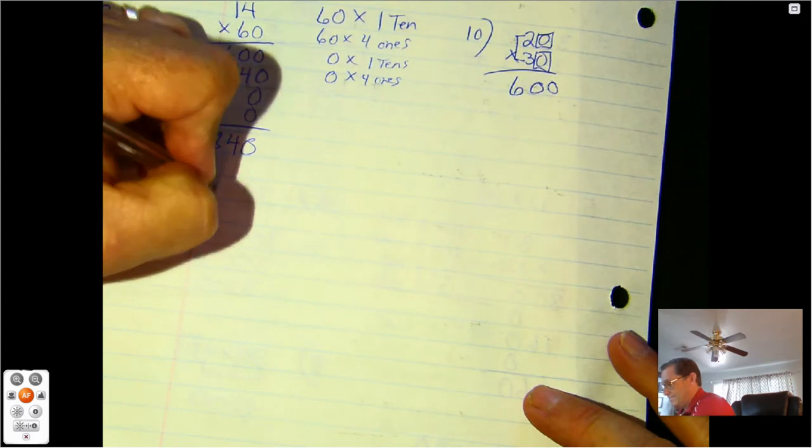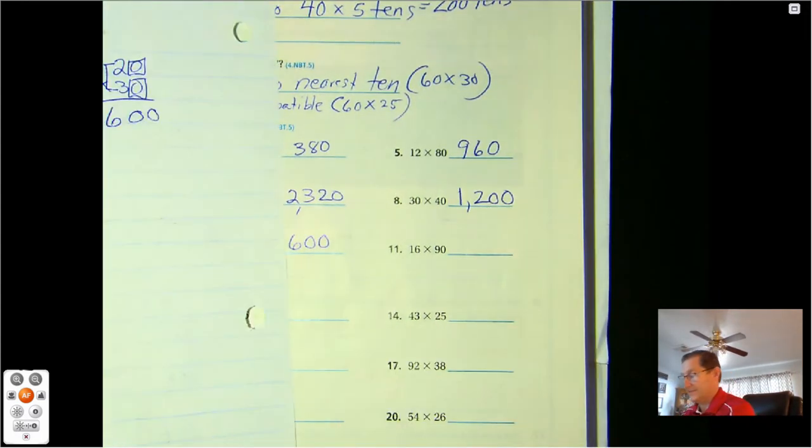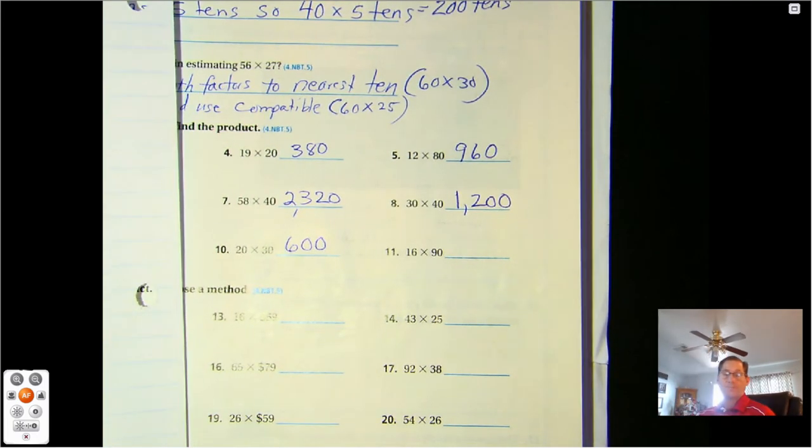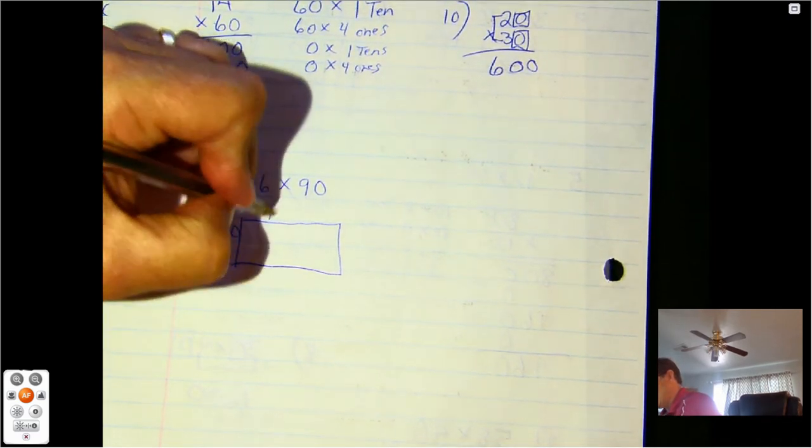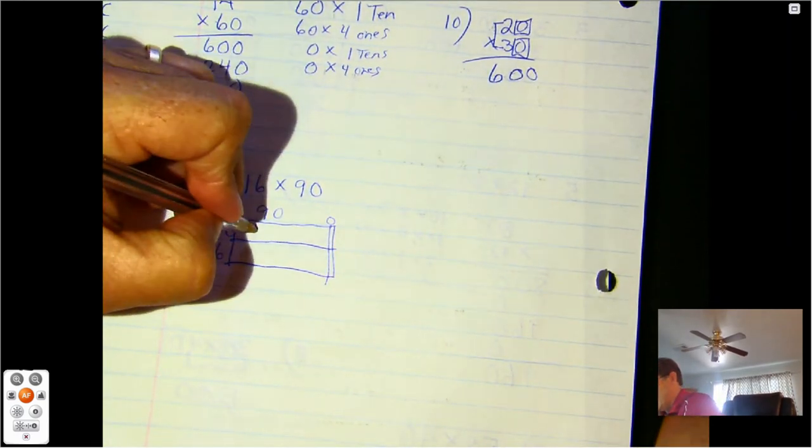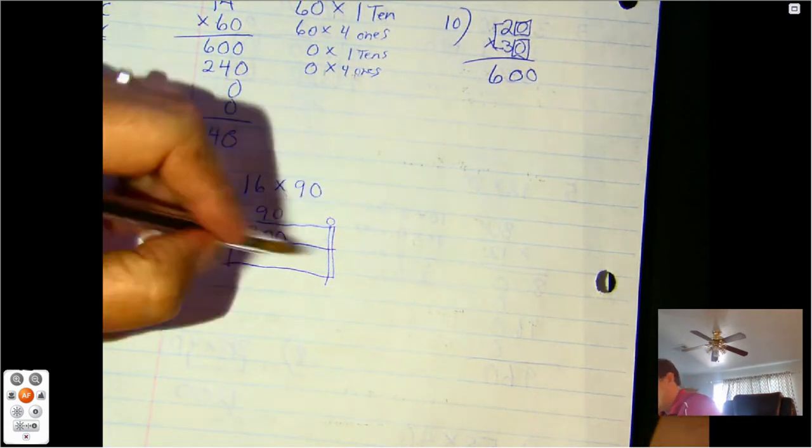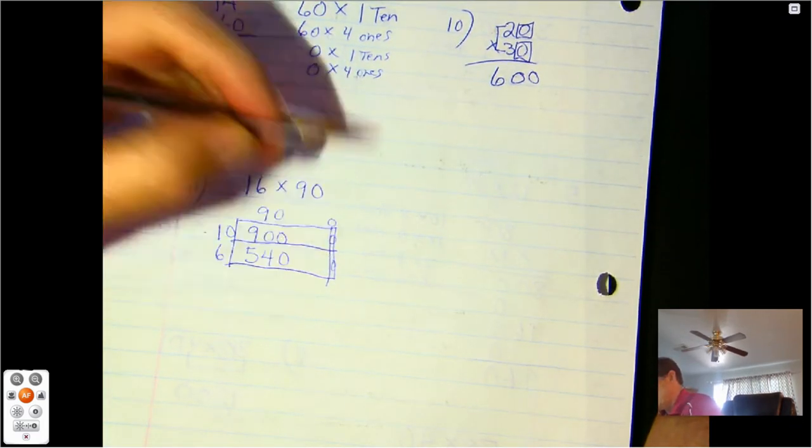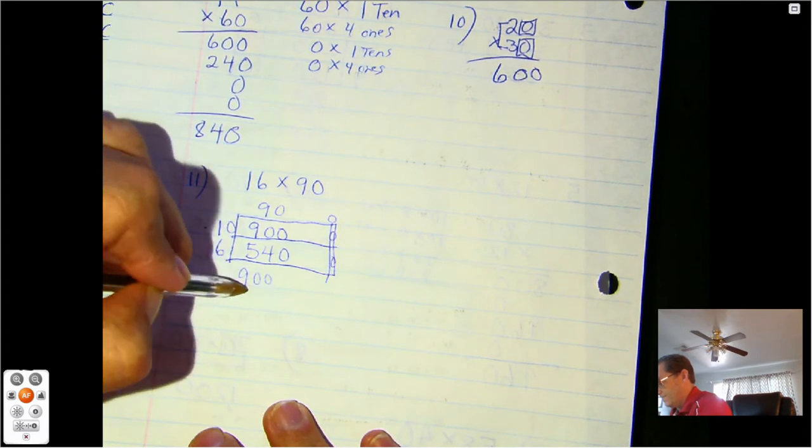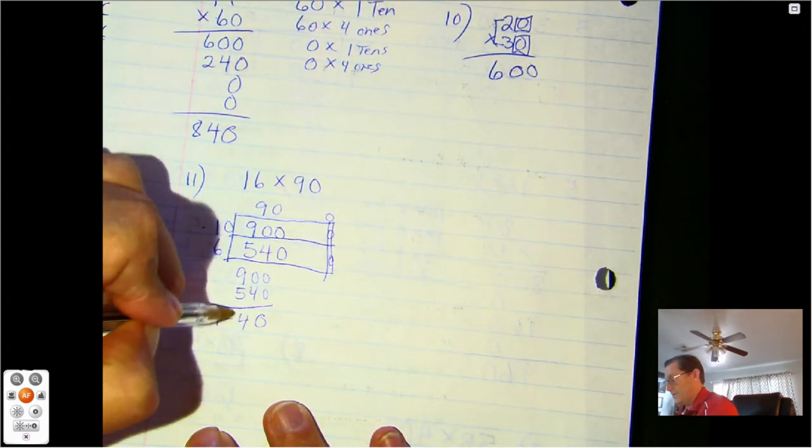Number 11 is 16 times 90. We can break it up. 10 and 6, 90 and 0. 10 times 90 will be 900. 90 times 6 is 540. 10 times 0 is 0, 6 times 0 is 0. So we only have to add 900 and 540. 1,440.